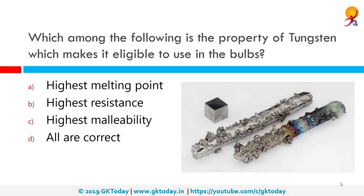Which among the following is the property of tungsten that makes it eligible for use in bulbs? The correct answer is its highest melting point. In an electric bulb, the filament must retain as much heat as possible to get very hot and emit light, and must not melt at such high temperatures. Tungsten has a melting point of 3,380 degrees Celsius — well above 3,000 — and is used for making bulb filaments. The bulbs are usually filled with chemically inactive nitrogen and argon gases to prolong the life of the filament. Most of the power consumed appears as heat, with a small part radiated as light.